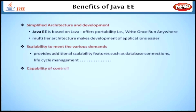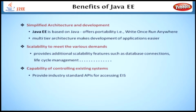Next, the ability of controlling existing systems. Java and Java EE provide a number of industry standard APIs for accessing EIS, such as JDBC API, Java Transaction API, and JNDI.